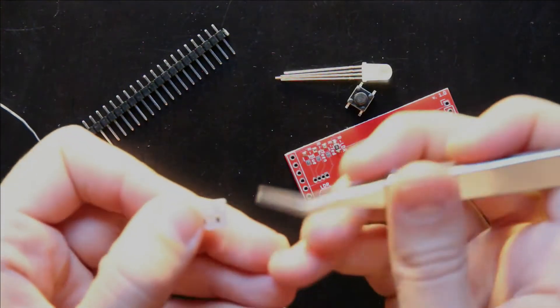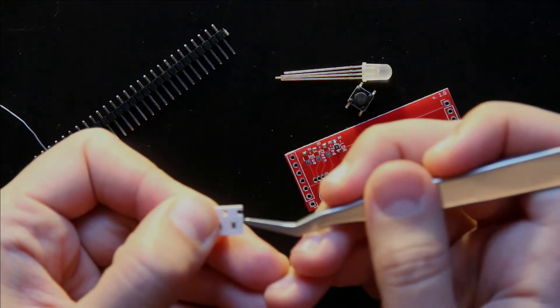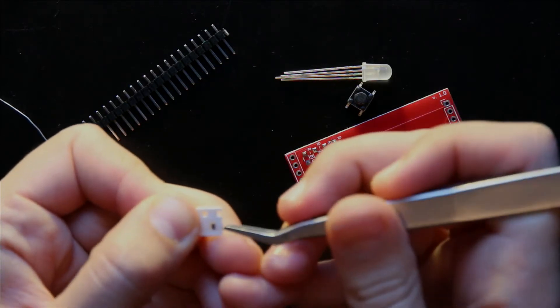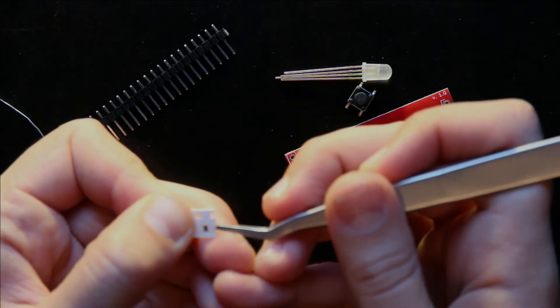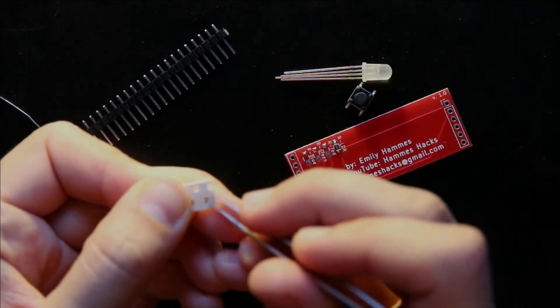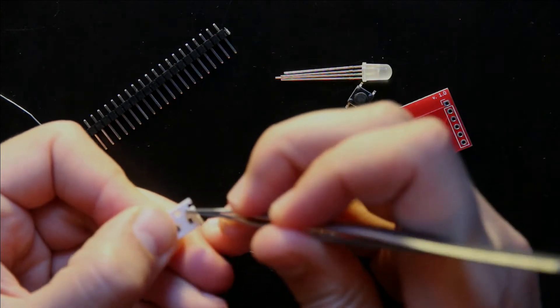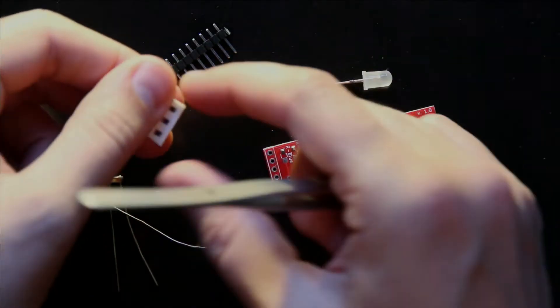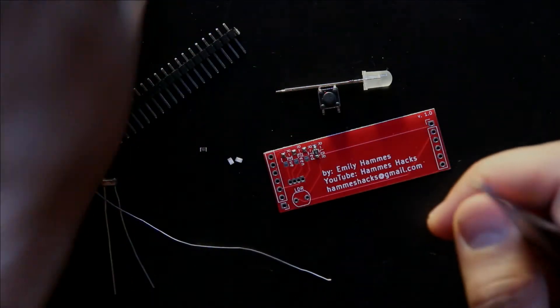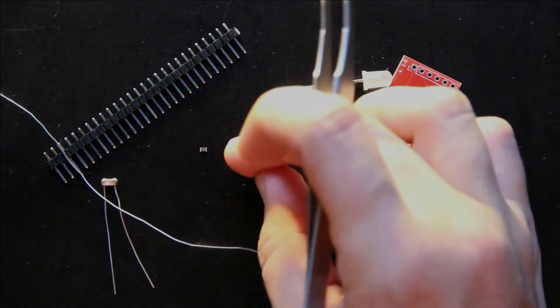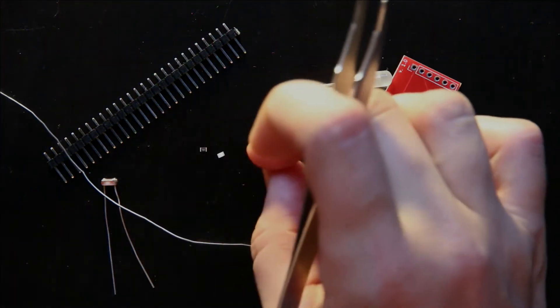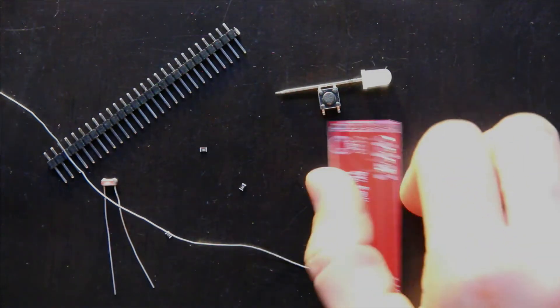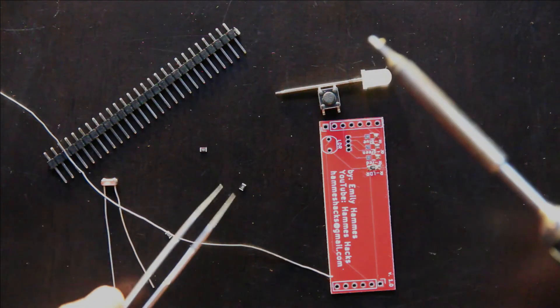And next I do the three resistors for the LED. And because these are resistors, it doesn't matter which side of the resistor is up, there's no orientation. But I prefer to put the number side up, because then if I need to change the size of the resistor later, I know what size I already have on there.